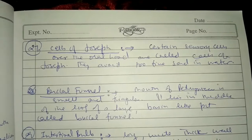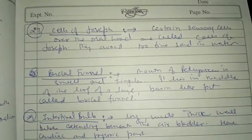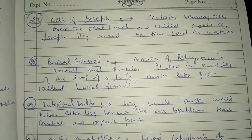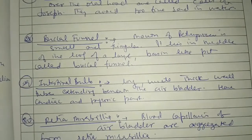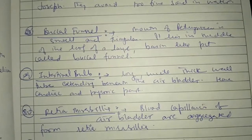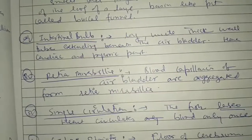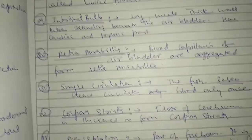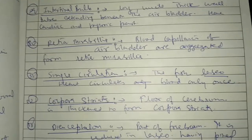Cells of Joseph, fecal funnel, intestinal valve, Rittia, Miravilla, single circulation, corpora striata.